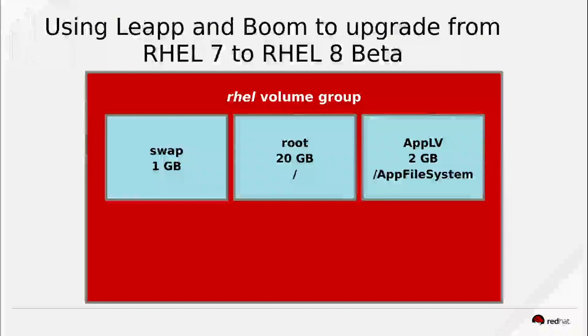Hi, my name is Brian Smith. In this video I'm going to show a demonstration of using the Boom Boot Manager in conjunction with a RHEL 7 to RHEL 8 Beta upgrade using the Leap tool. Boom allows you to make an LVM snapshot bootable, and in this example we would create a snapshot of our root logical volume while on the RHEL 7 system, then upgrade the system to RHEL 8 Beta. We would then have the option to simply reboot back to the original 7 environment by booting off the snapshot.